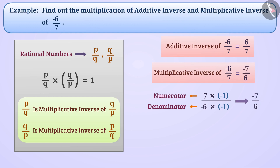Now we will multiply the additive inverse 6/7 and the multiplicative inverse -7/6 of -6/7 with each other. This gives: 6/7 × (-7/6) = -1. Therefore, -1 is the answer to the given question.